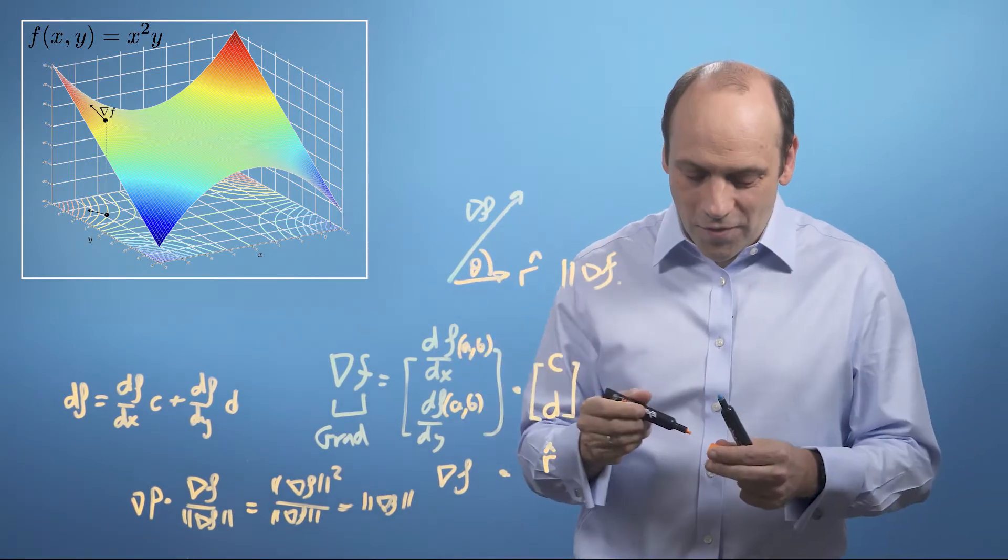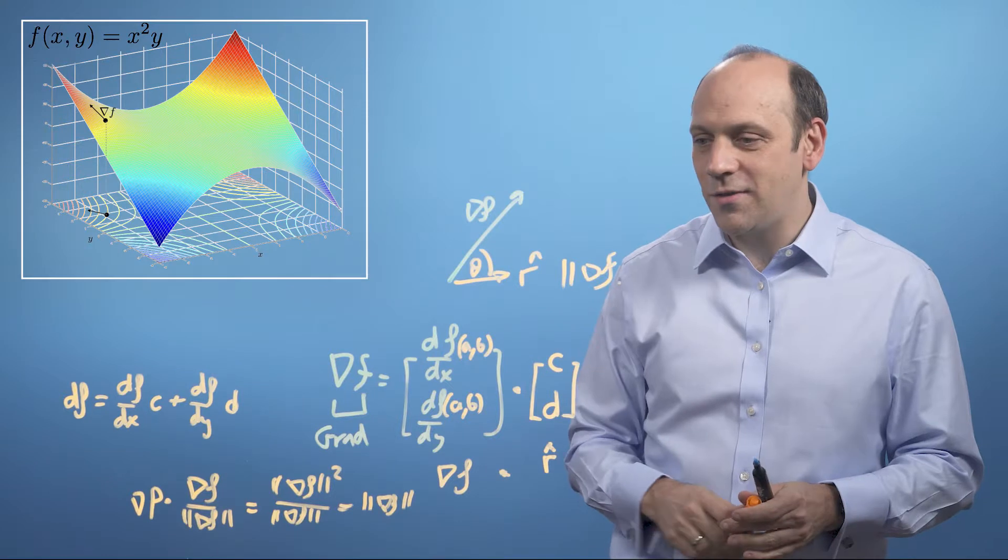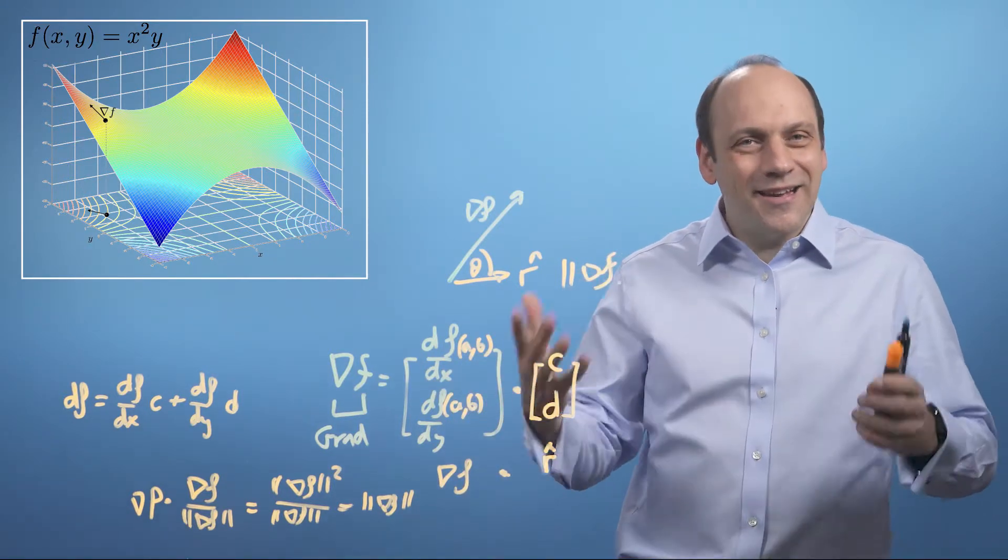So the maximum value the directional gradient can take is just the size of grad f. And that's therefore the steepest gradient we can possibly have. The size of the steepest gradient we can possibly have is just the size of grad f, the sum of the squares of the components of grad.